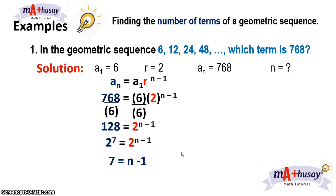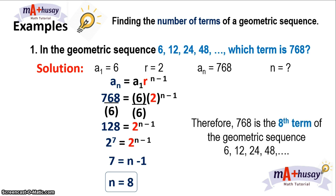So we can solve for n. To solve for n, we have to add both sides of the equation by positive 1. So n is equal to 8. Therefore, we can say that 768 is the 8th term of the geometric sequence 6, 12, 24, and 48.